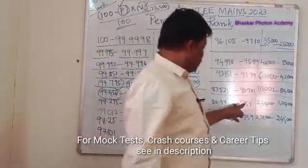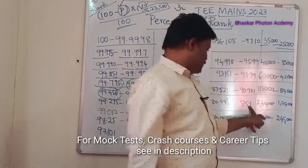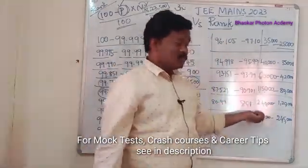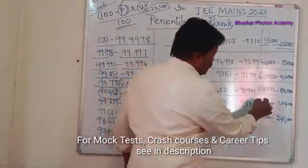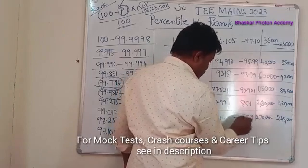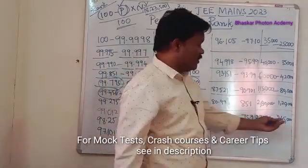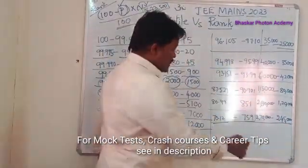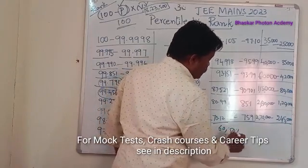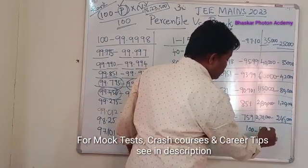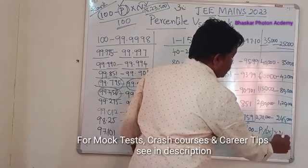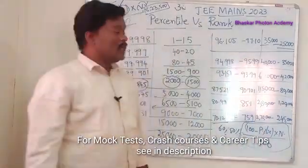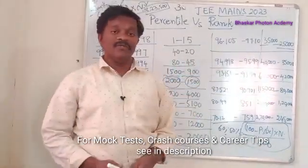If you have a percentile of 85 to 80, ranks are approximately 1 lakh 20 thousand to 2 lakh 40 thousand, though it may be around 2 lakh. Percentile range 75.9 to 70 gives ranks approximately 2 lakh 40 thousand to 2 lakh 70 thousand. For lower scores like 60 or 50 percentile, you can calculate using the formula: rank = (100 minus percentile) × number of candidates appeared, divided by 100. Thank you students, thank you very much.